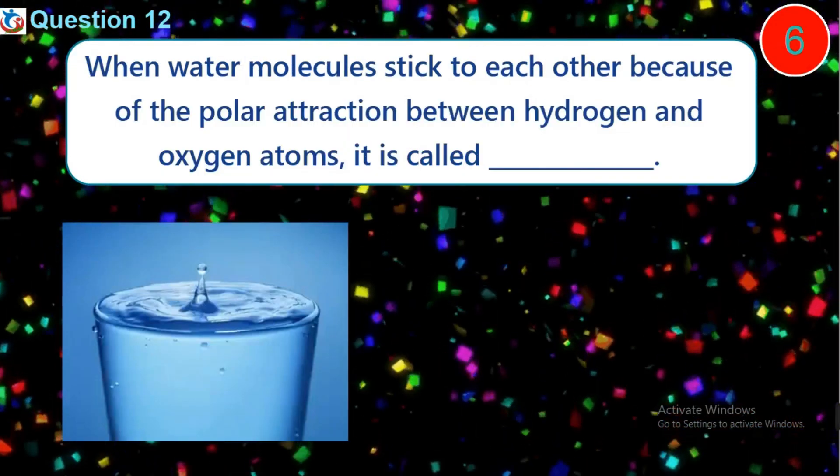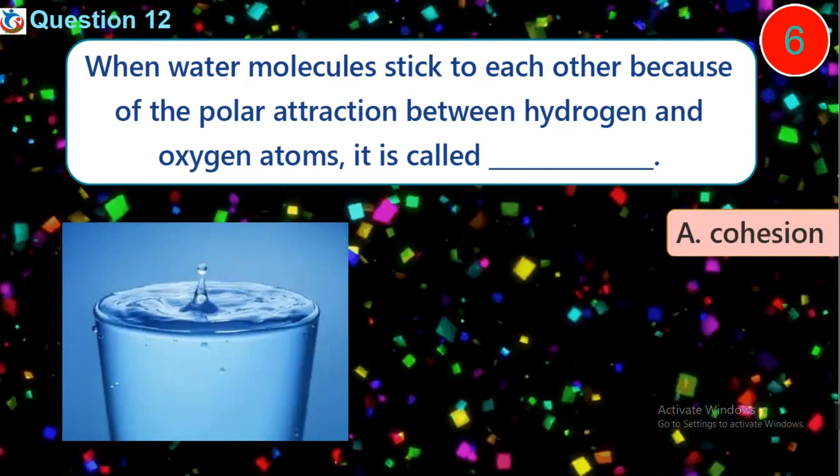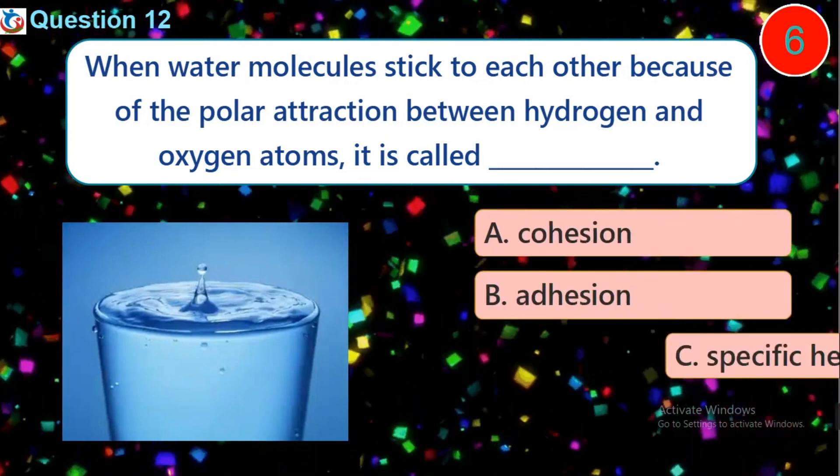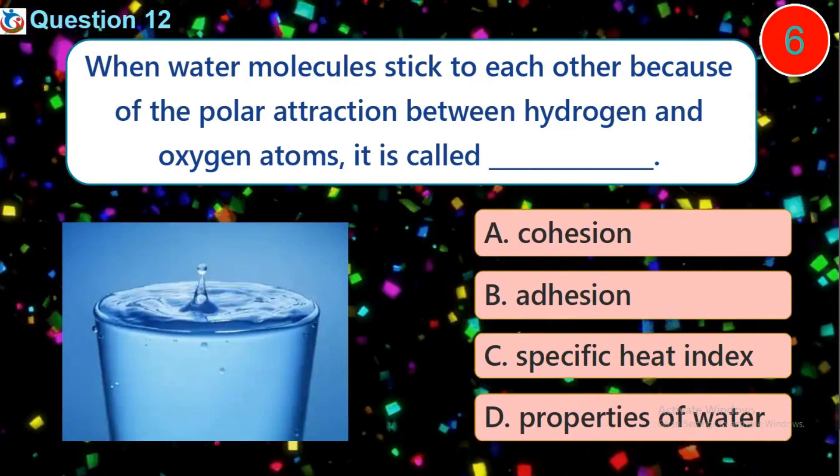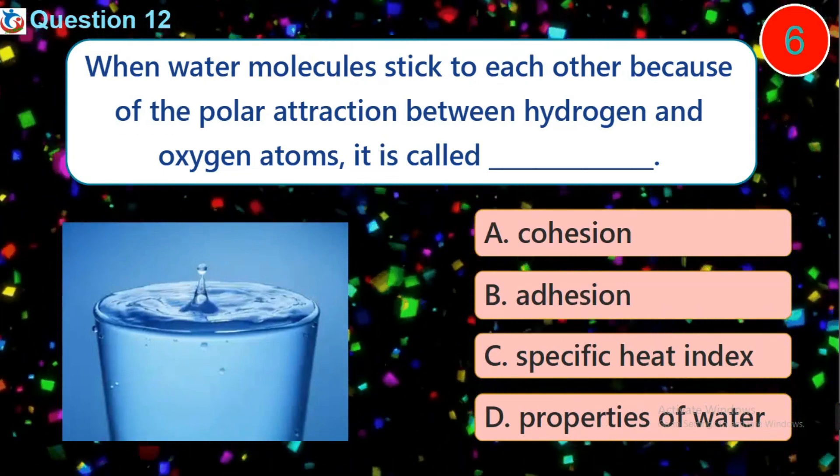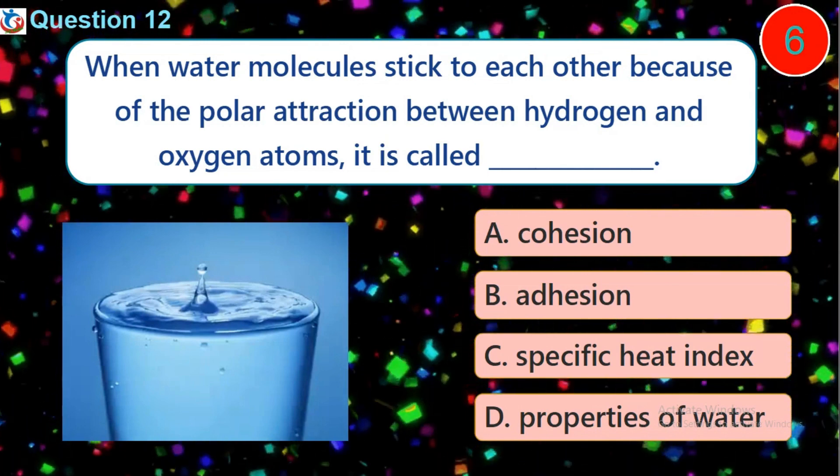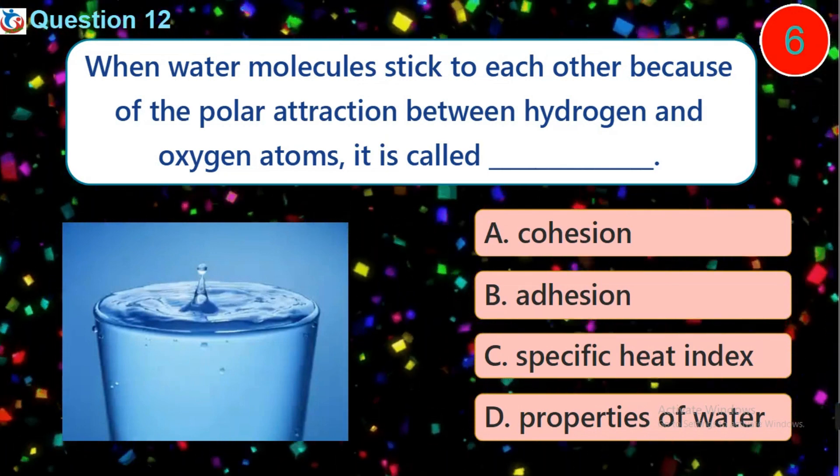Question 12. When water molecules stick to each other because of the polar attraction between hydrogen and oxygen atoms, it is called? A. Cohesion B. Adhesion C. Specific heat index D. Properties of water